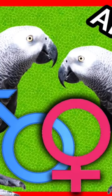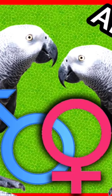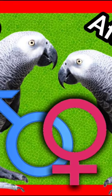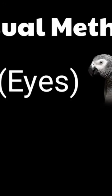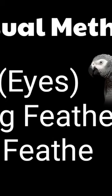Welcome to Nadia Parrots Cross. In this video we are going to talk about how to visually identify the gender of African Grey Parrots. I will give you the three visual methods: one, seeing through the eyes; second, seeing underneath the wings and wing feather; and thirdly, at the tail feather.